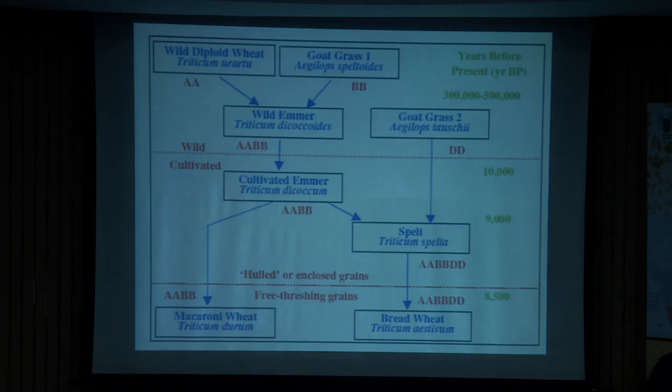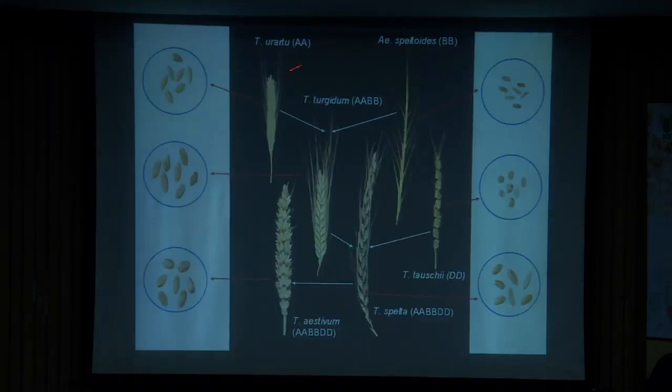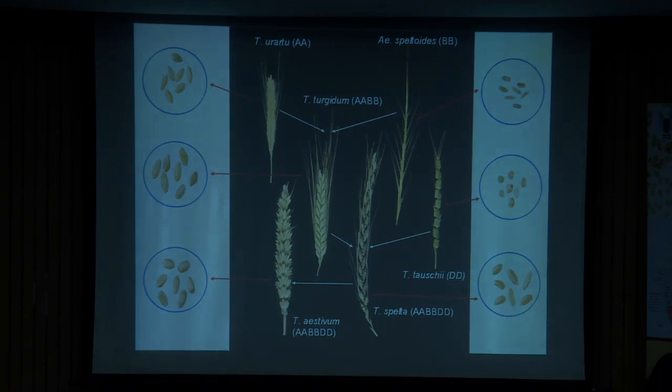This is how these genomes look. Triticum urartu has a very compact spike, and speltoides is like a grass — very grassy in nature. The cross in nature, meaning the evolution of hexaploid wheat, occurred in nature.